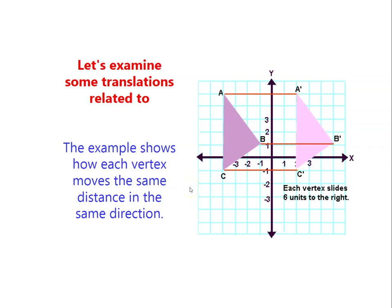So how will we solve the distance? It says here that each vertex slides six units to the right — one, two, three, four, five, six. The B vertex here: one, two, three, four, five, six. And also A: one, two, three, four, five, six. So the object just only slides from here going to the right side, from quadrant two and three going to quadrant one and quadrant four.